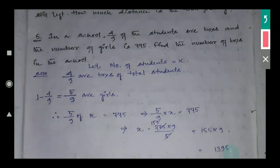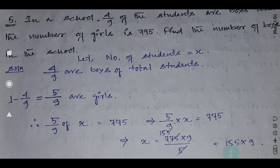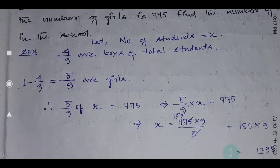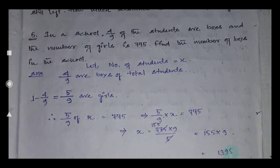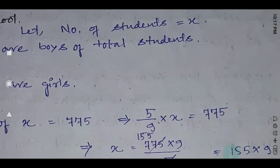So the number of boys is 4/9 and girls is 5/9. The question gives that the number of girls is 775. So 5/9 of x equals 775. To show the process: number of boys is 4/9, so number of girls equals 1 minus 4/9 equals 5/9. And 5/9 of x equals 775.